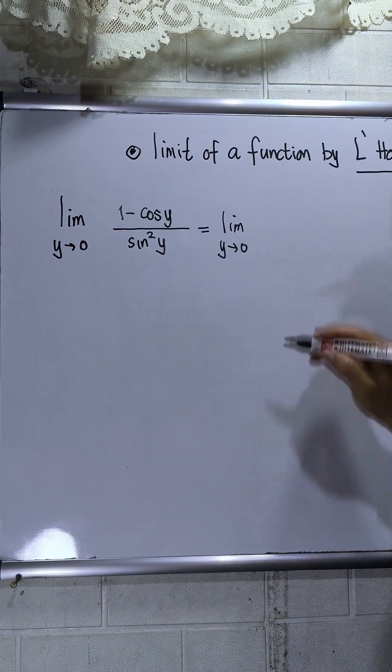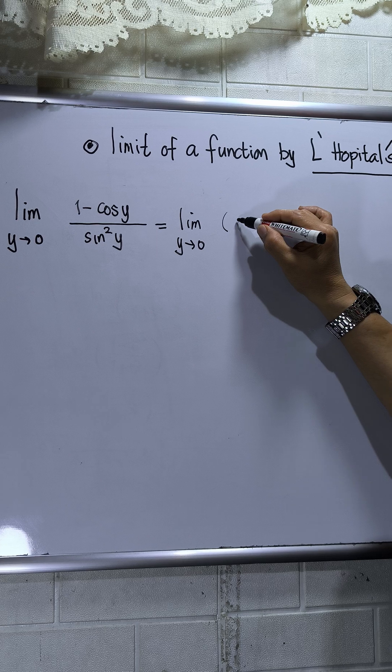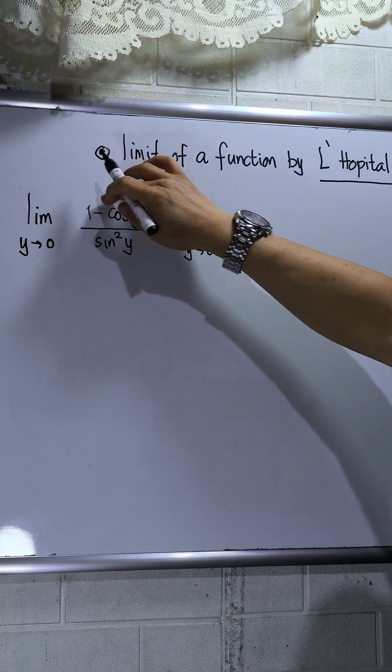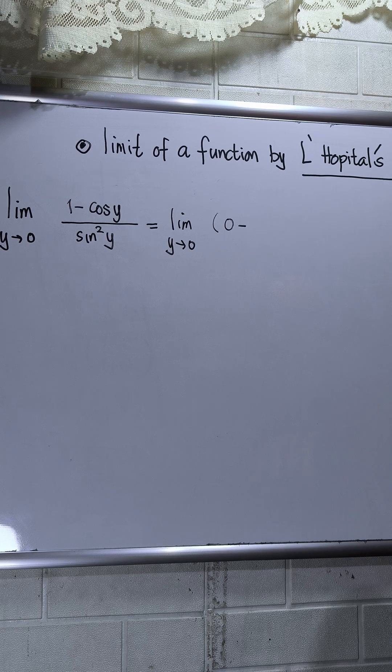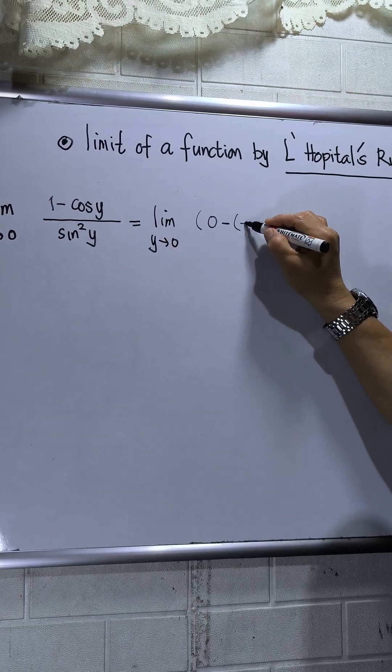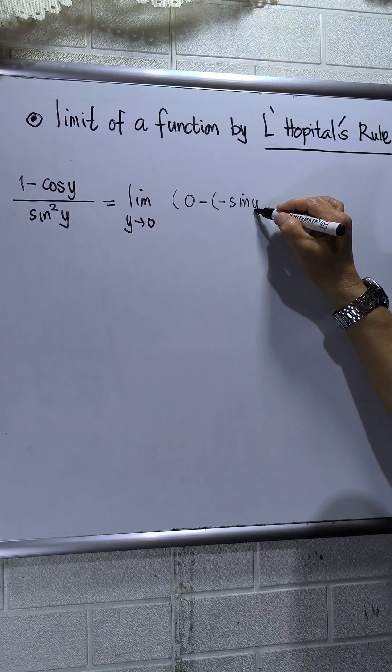Then the derivative of the numerator—I have now circle brackets—derivative of 1 is 0, then minus, derivative of cos y is negative sin y.